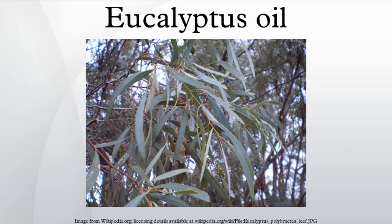Eucalyptus oil was subsequently extracted by early colonists but was not commercially exploited for some time. Baron Ferdinand von Müller, Victorian botanist, promoted the qualities of eucalyptus as a disinfectant in fever districts, and encouraged Joseph Bosisto, a Melbourne pharmacist, to investigate the commercial potential of the oil. Bosisto started the commercial eucalyptus oil industry in 1852 near Dandenong, Victoria, Australia, when he set up a distillation plant and extracted the essential oil from the cineol chemotype of Eucalyptus radiata.